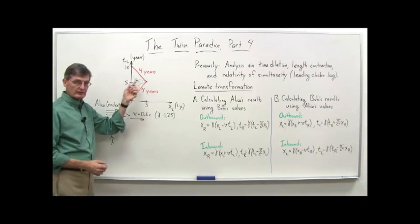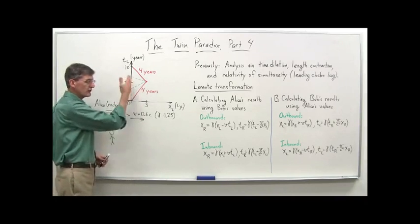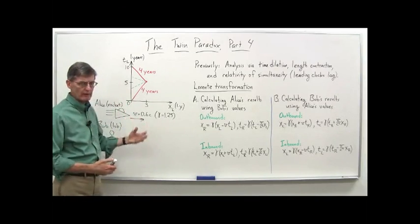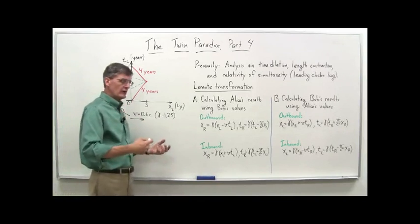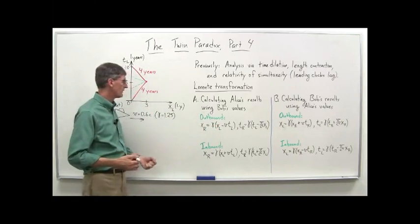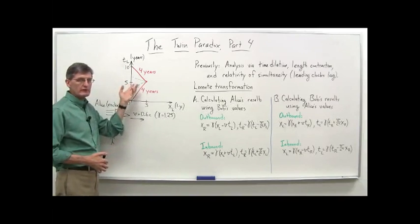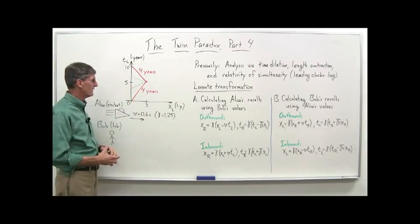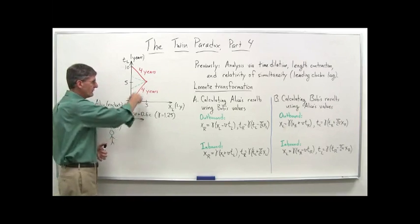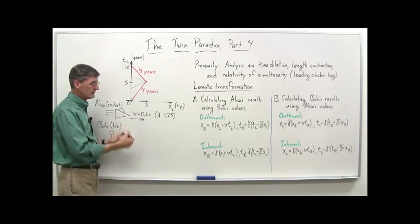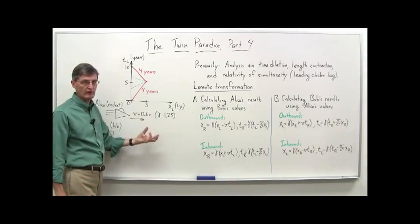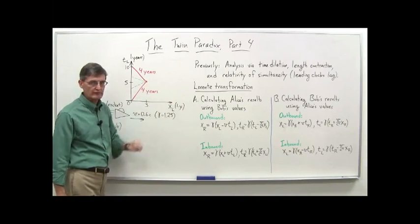The deceleration and acceleration at the turnaround point is the key factor, because that's what changes the frames of reference for Alice, giving the jump in time as Alice observes Bob's clock. The special theory of relativity applies only to inertial frames, but you don't need the general theory here — you just assume the acceleration occurs over a short enough time that you can analyze it using the special theory. It's really the change in reference frame that gives us the results.